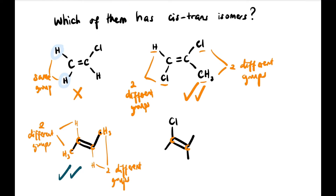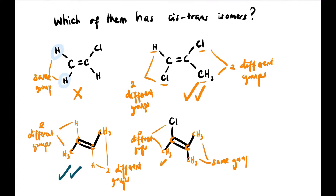Yang bawah ini pula, kita label dulu: C double bond C, ada CH3, ada H ya — yang tidak tulis itu ada H. Jadi, C yang dekat double bond itu kita fokus — ada two different groups kan? Ada H dengan CH3. Yang bawah itu, yang C itu pun ada juga dua different group iaitu H dengan CH3. So, this one also has cis-trans isomers. Alright. Now, kalau yang sebelah kanan ini pula, kita sudah label: yang sebelah kiri ada two different groups iaitu CL dengan CH3. Tapi yang karbon sebelah kanan itu pula, ada CH3 dan CH3 which is same group. So, this one doesn't have cis-trans isomers.